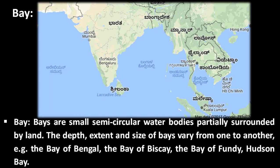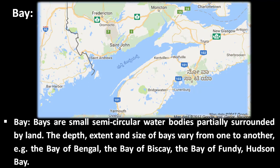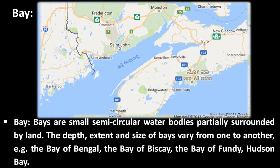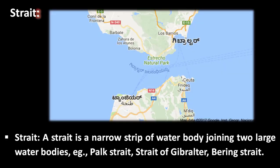Bays are small semi-circular water bodies partially surrounded by land. The depth, extent, and size of bays varies from one to another. Examples include the Bay of Bengal, the Bay of Biscay, the Bay of Fundy, and Hudson Bay.